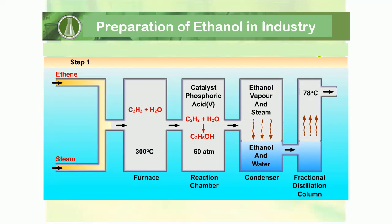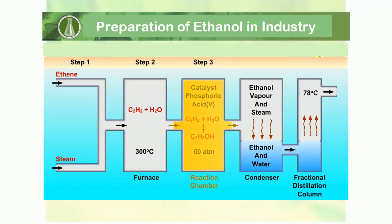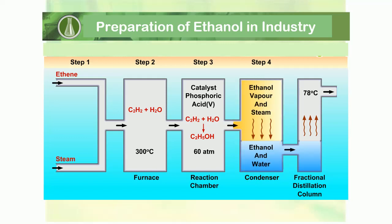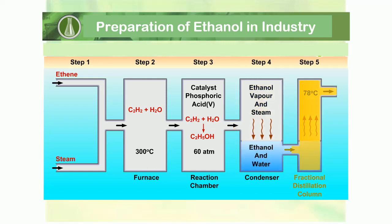Ethene, produced during the cracking of petroleum and steam, is piped through a furnace. The furnace increases the temperature of the mixture to 300 degrees Celsius. The mixture is subjected to a pressure of 60 atmospheres using phosphoric acid as a catalyst. Ethanol is formed in the reaction chamber. Ethanol vapour and steam is then cooled in a condenser into a liquid mixture of ethanol and water. The ethanol is separated from water by fractional distillation.